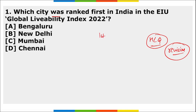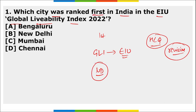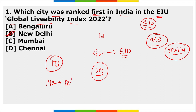First MCQ: Which city was ranked first in India in the EIU Global Livability Index? The answer is New Delhi. The EIU stands for Economic Intelligence Unit. Data was ranked among 173 cities. Delhi was ranked 148th globally, Mumbai 141st, Chennai and Ahmedabad at 142nd and 143rd respectively, and Bangalore at 146th.